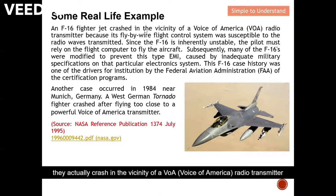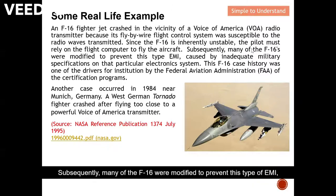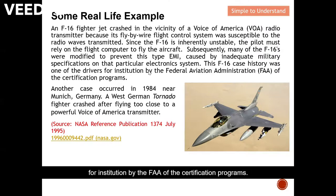An F-16 flight crashed in the vicinity of a Voice of America radio transmitter because its fly-by-wire flight control system picked up the transmitted radio waves, causing interference. Since the F-16 is inherently unstable, the pilot must rely on the flight computer to fly the aircraft. Subsequently, many F-16s were modified to prevent this type of EMI, caused by inadequate military specifications on the electronic system. This F-16 case was one of the drivers for the FAA certification program.